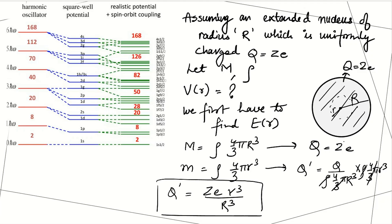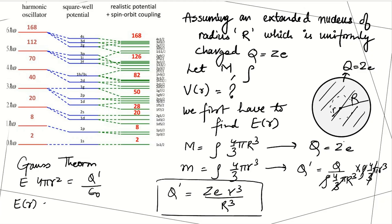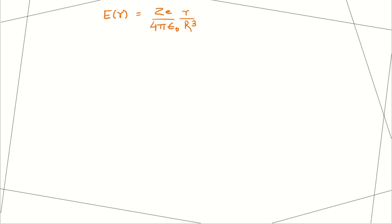We can use Gauss's theorem to find the electric field expression. Applying Gauss's law — electric field times surface area equals total enclosed charge q' over ε₀ — the expression for electric field becomes E = Ze·r / (4πε₀R³). We cancel r² from the surface area with r³, leaving a single factor of r.